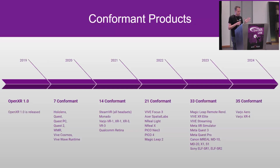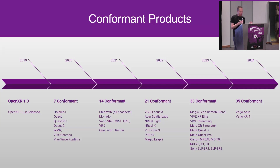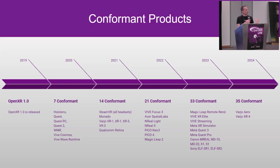On conformant products: since the release we've had 35 conformant products, which is pretty exciting. There are probably more devices that are OpenXR-capable but not yet officially conformant. There are lots of OpenXR conformant products — and more listed on the web.